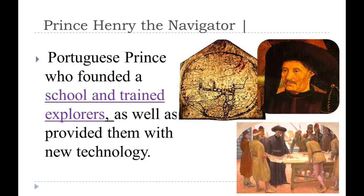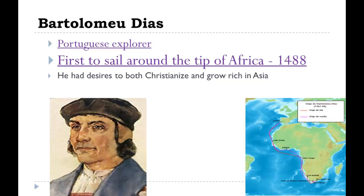The next Portuguese explorer is Bartholomew Dias. He took off and landed down at Cape Verde, the Benin Islands, the Congo, and came down to different places. He was the first one to go around the southern point of Africa. Everybody knew it had to end somewhere, but he was the first to confirm it — and he turned around and came back home to report what he found. He was the first one to round the southern tip of Africa, now called the Cape of Good Hope.